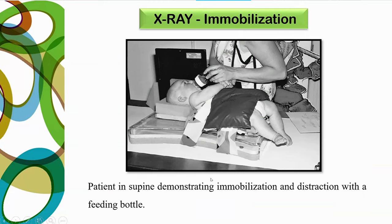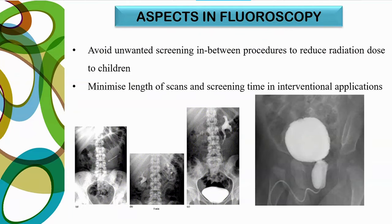In the X-ray department, use separate immobilization devices for handling pediatric patients. For fluoroscopy, avoid unwanted screening in between procedures to reduce radiation dose to children — for example, avoid intermittent screening during an MCU procedure just to check bladder filling, as this can be avoided to reduce dose to the pediatric patient.